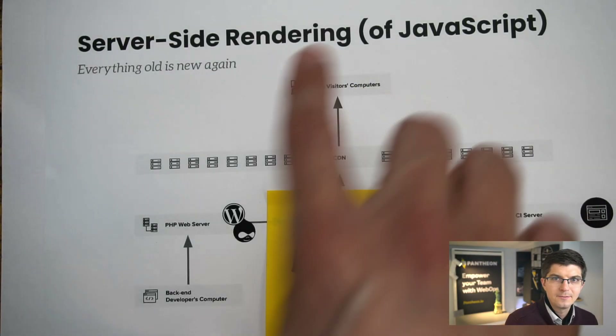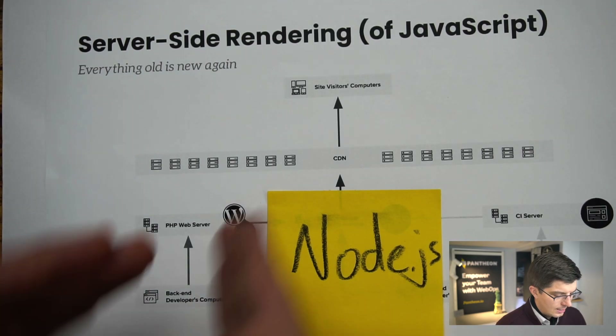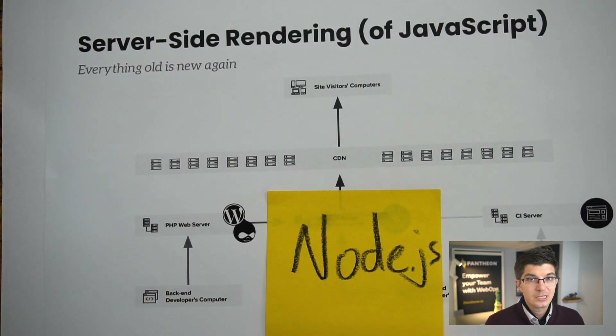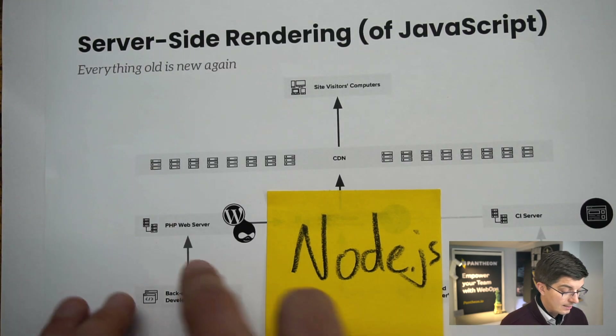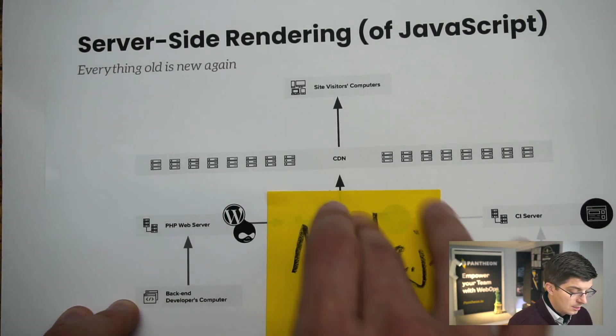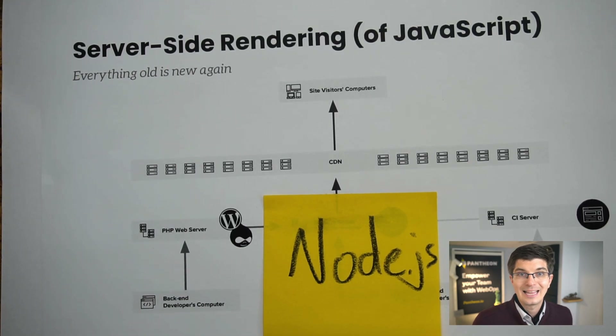To reference a term from my last blog post and video, this model right now strikes me as the state-of-the-art. You can deliver a really top-notch performant website to the website visitors — that's most important. Content editors get instant publishing, especially if a platform like Pantheon is handling the cache details and cache metadata between these different layers. You can do fine-grained caching.